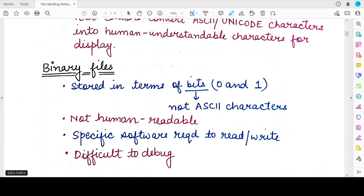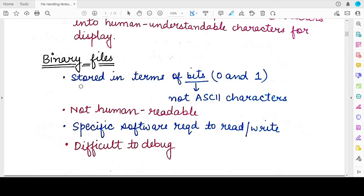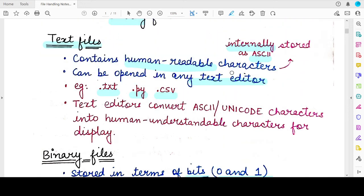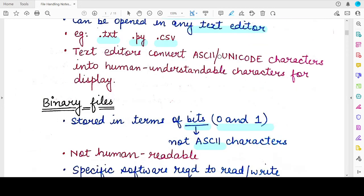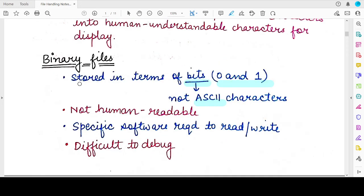Now coming to binary files. Binary files are stored in the form of zeros and ones, zeros and ones refer to the bits. Now these bits do not form any kind of ASCII characters. In text file also internally, the computer saved the text files in the form of bits, but those bits were representing some ASCII characters.